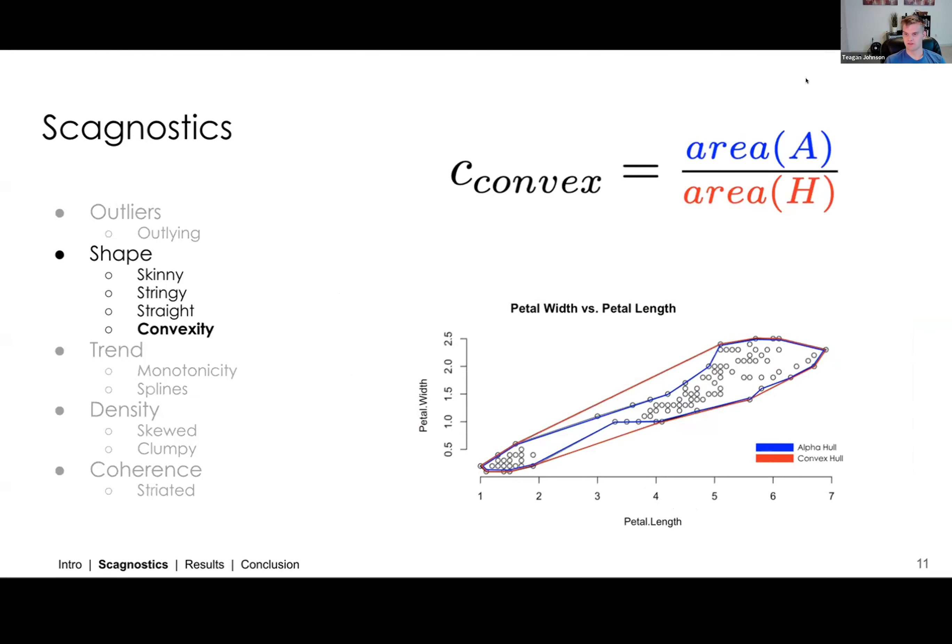And the way that we measure convexity in this graph is we take the area of the alpha hull, which is outlined in blue on the graph, and we take the area of the convex hull, which is outlined in red. And then we divide those two to get some value between zero and one. The value closer to one means that it's more convex. The value closer to zero means that it's less convex. And so basically, all of these diagnostics are measurements between zero and one.